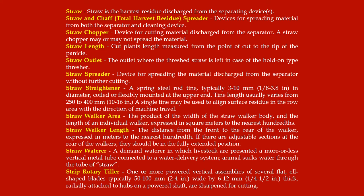Straw spreader: device for spreading material discharged from the separator without further cutting. Straw straightener: a spring steel rod tine typically 3 to 10 mm (1/8 to 3/8 inch) in diameter, coiled or flexibly mounted at the upper end; tine length usually varies from 250 to 400 mm (10 to 16 inches); a single tine may be used to align surface residue in the row area with the direction of machine travel.